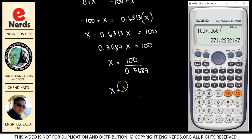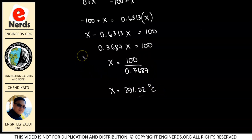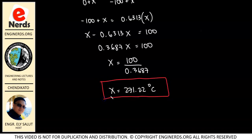So we have X equal to 271.22. As mentioned, we are working in degrees Celsius, so this is our final answer for the problem. If you check the book, the answer is written at the bottom, and you can see that our answer matches.